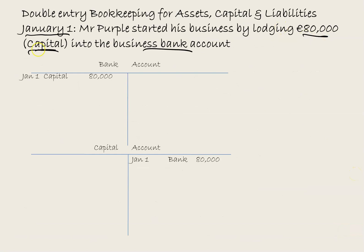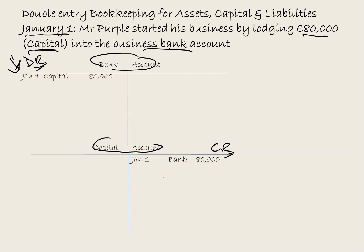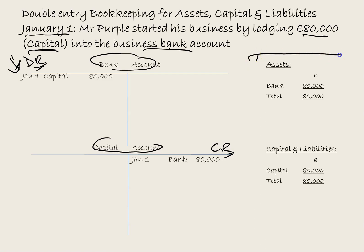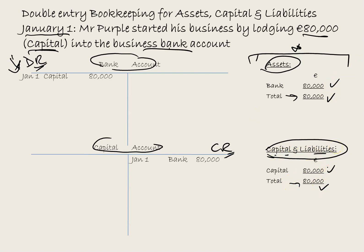For January 1st, we have a bank account and a capital account. Money going into the bank goes in on the debit side — to increase an asset, you debit it. On the capital account, it goes in on the credit side — to increase capital, you put it on the credit side. Looking at the accounting equation: total assets are $80,000 (the cash in the bank), and total capital plus liabilities is $80,000 (the capital). The equation balances.